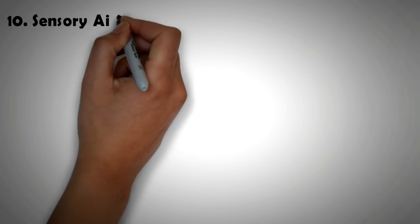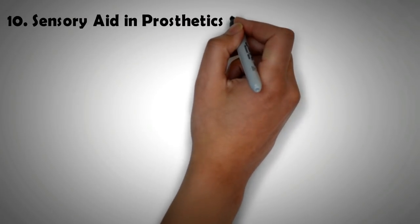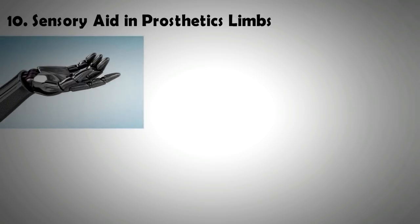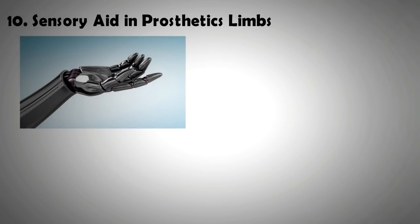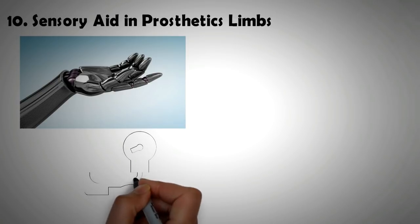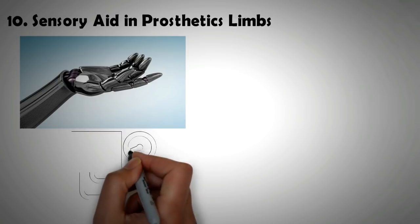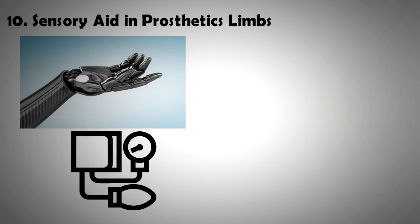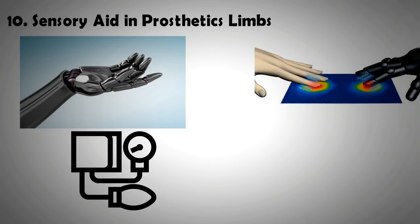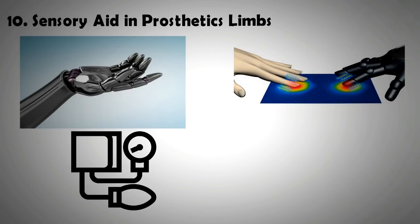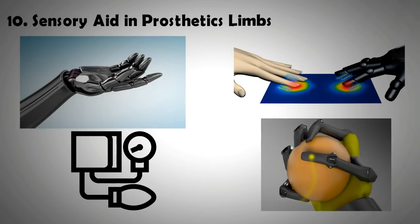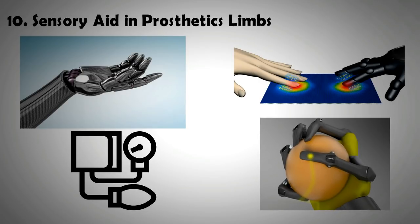Application number ten is sensory aid in prosthetic limbs. In prosthetic limbs, due to the absence of nerve cells, the sensation of touch is lost. One of the possible solutions that scientists are looking into is the use of layers of graphene on the outer surface dubbed as the e-skin or artificial skin. Normal pressure sensors operate on a range which is at low pressure. At higher pressures, the sensitivity of normal pressure sensors is lost. Graphene-based pressure sensors operate over a wide range of pressures. They can therefore be used for gentle touch as well as hard grab.